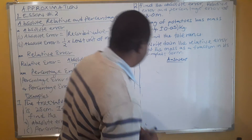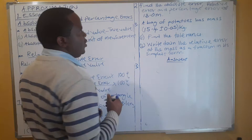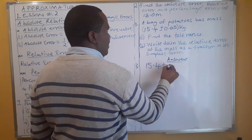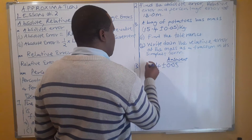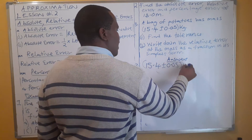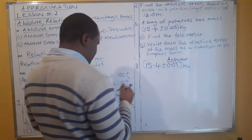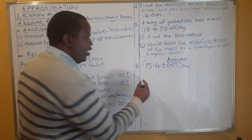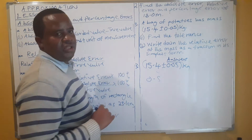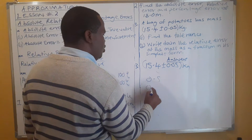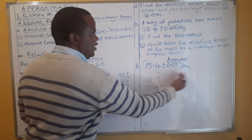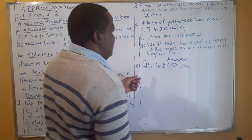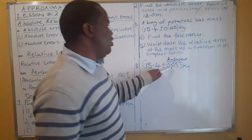Now for question 3. The dimension given is 15.4 ± 0.05. The ± 0.05 represents the absolute error. Remember, for a number with one decimal place, the absolute error is 0.05, which matches this. So this measurement has an absolute error of 0.05.